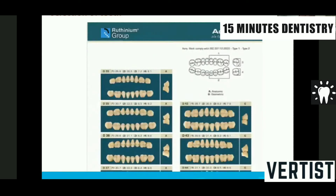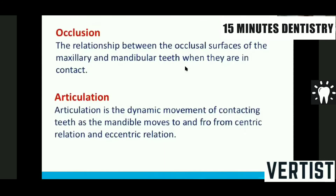Similarly, posterior teeth selection follows the same system. Number 1 is the upper core posterior, number 2 is the lower core posterior, number 3 is the buccolingual width of the upper molar, and number 4 is the buccolingual width of the lower molar. The relationship between the occlusal surfaces of maxillary and mandibular teeth in contact during centric and eccentric motion is called articulation.